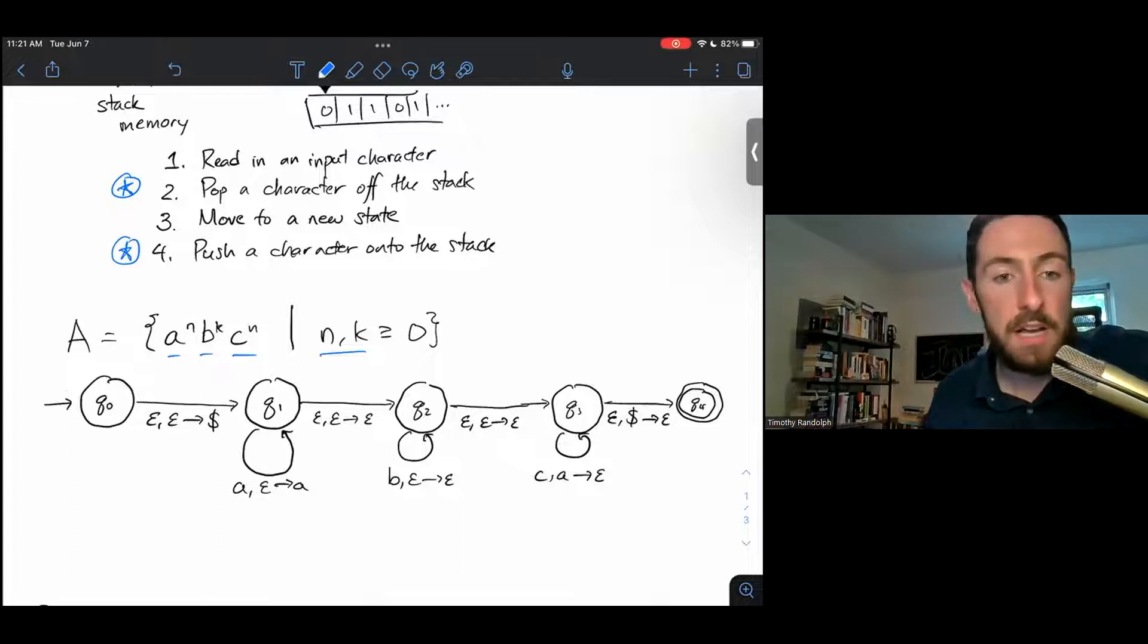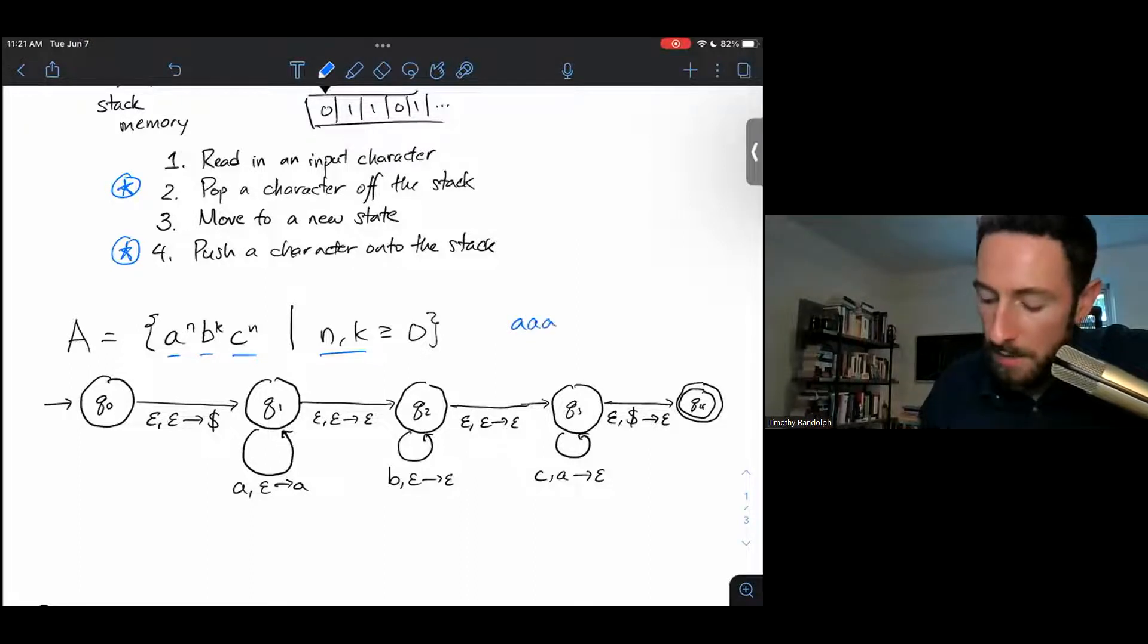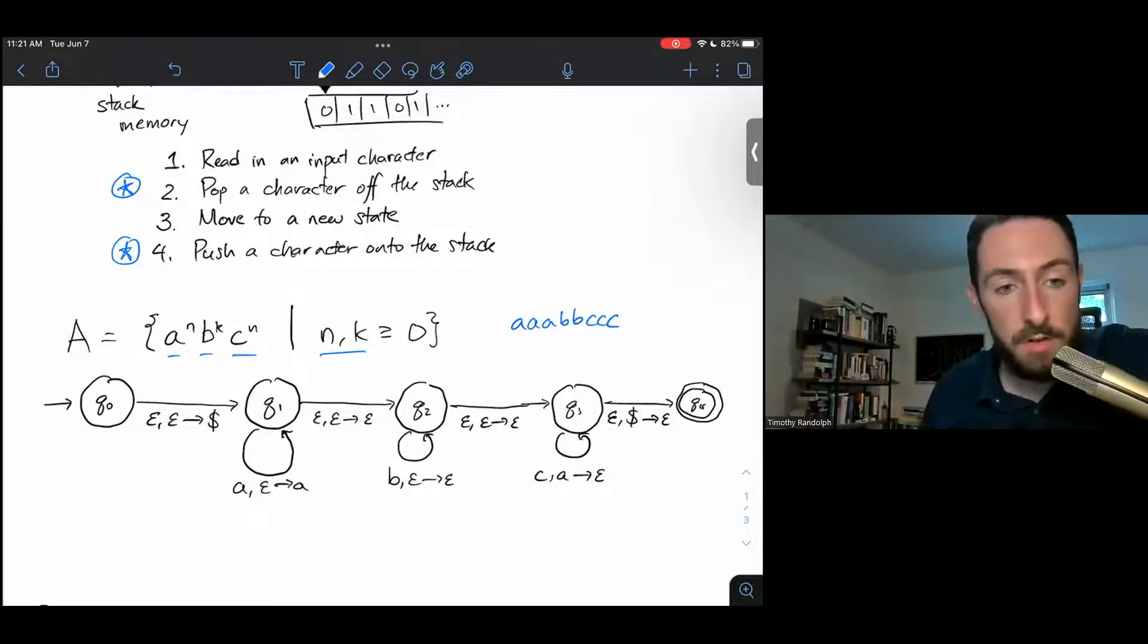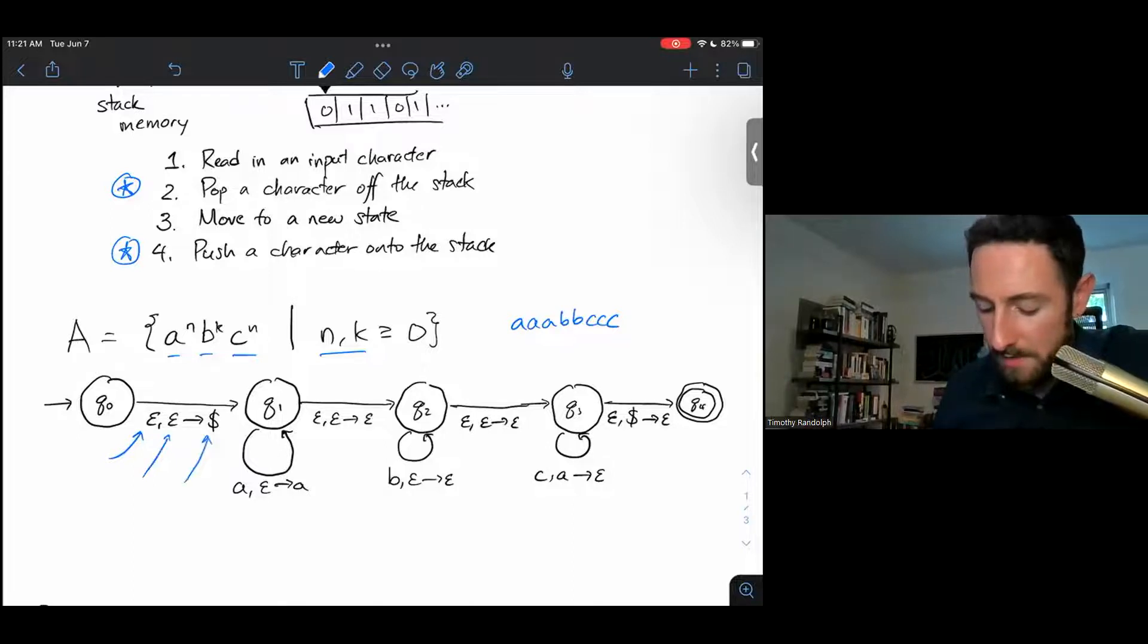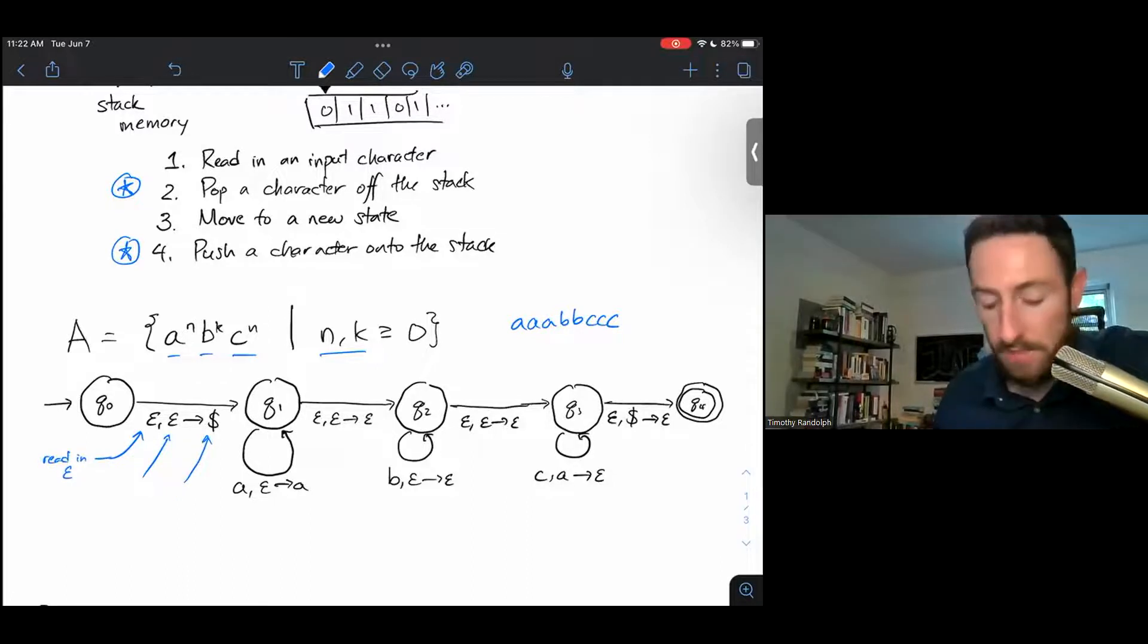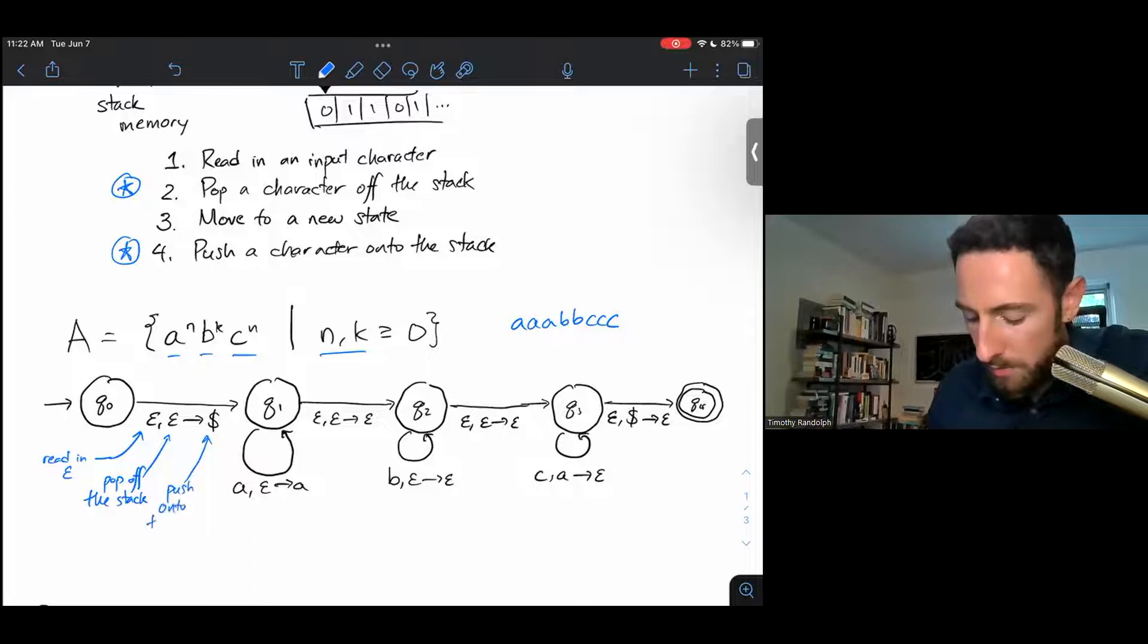So let's watch what this particular automaton does. We'll follow the branch of computation that accepts if we plug in the string, maybe A, A, A, B, B, C, C, C. So we'll start at Q0. And then we'll take this first transition. Transitions in pushdown automata use this little format of A comma B arrow C, where the first character is what we read in from the input. In this case, we don't read in anything. The second character is what we pop off the stack. So when we start, our stack is empty. There's nothing to pop off. And finally, the third thing we write down is the character we push onto the stack.